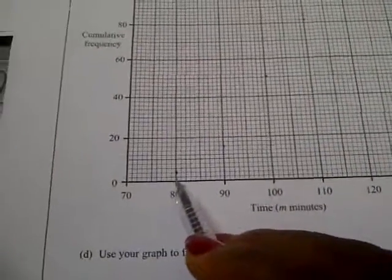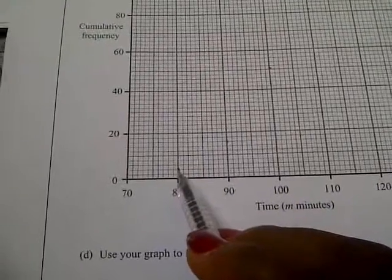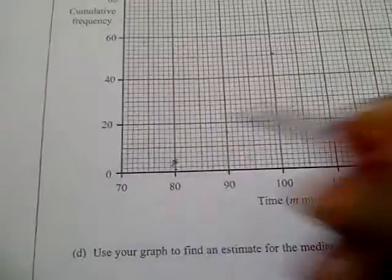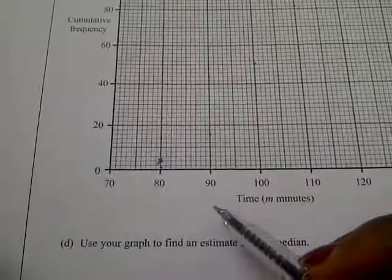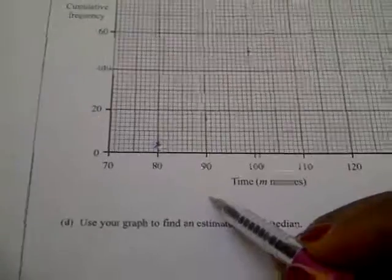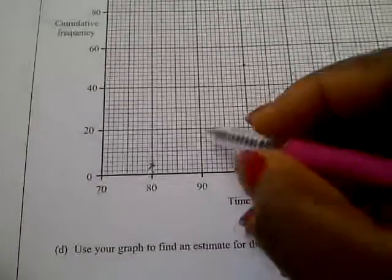From what we already got, we have that when x is 80, y will be 4. That's at this point. Then for the second one, when x is 90, y will be 16. That's at this point.